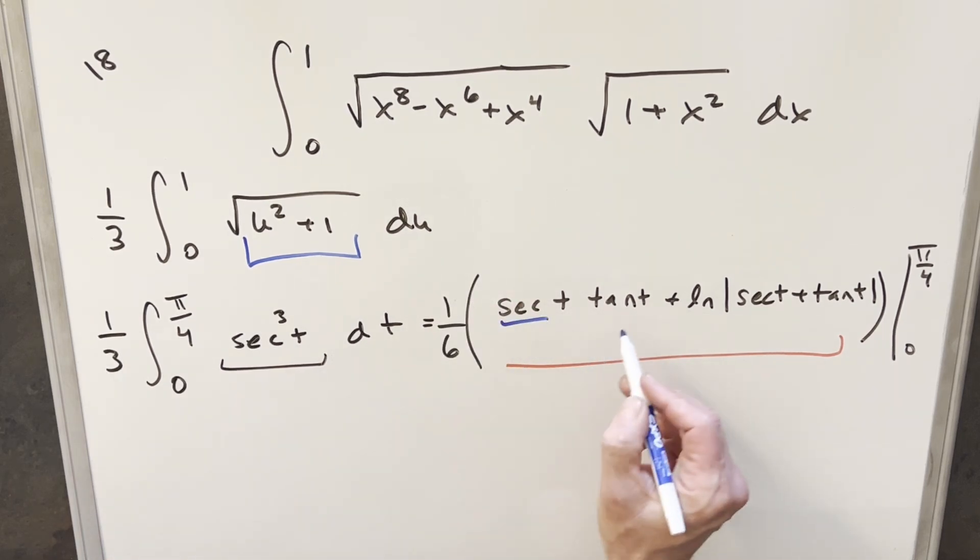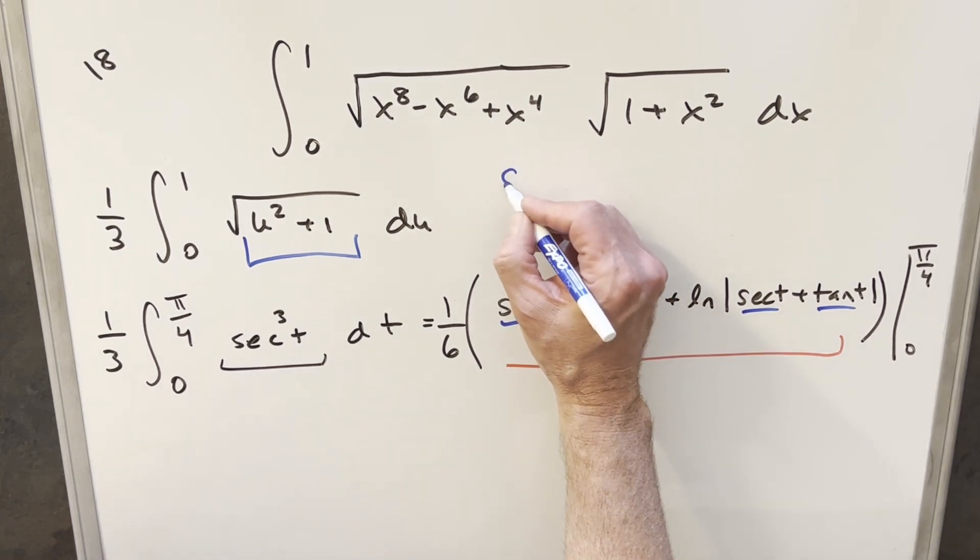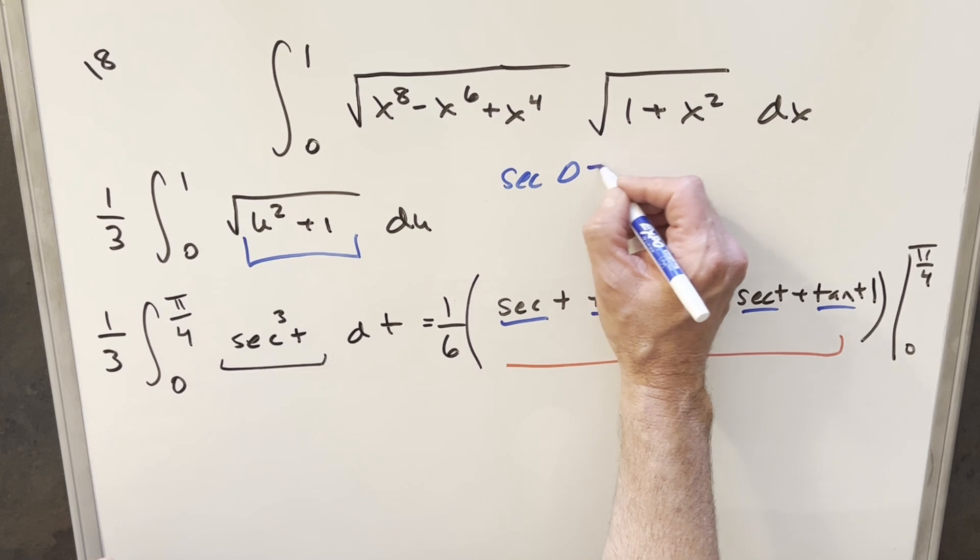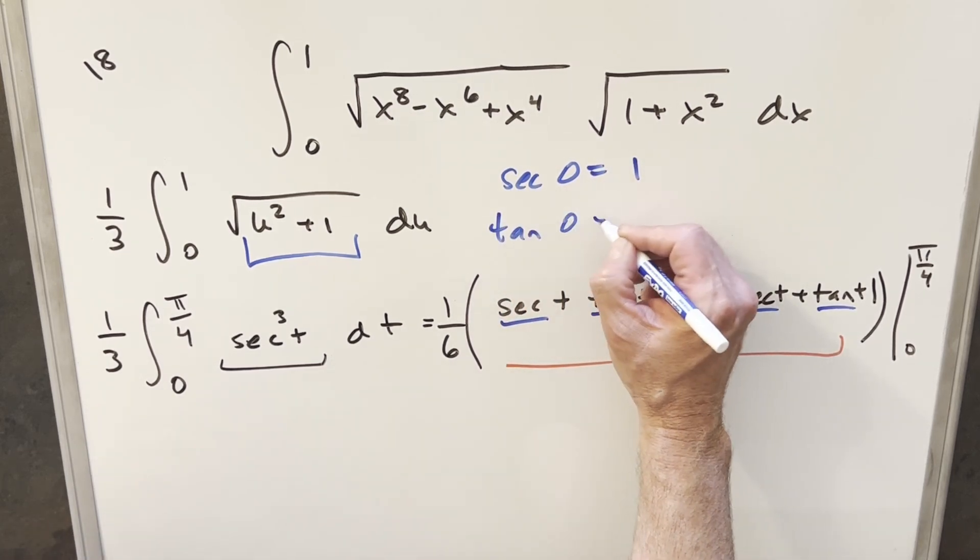Actually, one other thing I can do is we're just going to need values for secant t and tan t for 0 and pi over 4. Well, first let's deal with the 0. So secant of 0, that's just going to be 1. And then tan at 0, that's going to be 0.